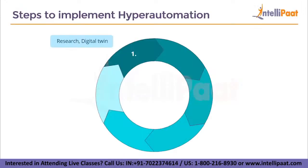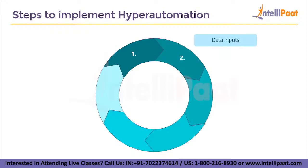The first step to implement hyperautomation is to gain knowledge of the already existing manual operations and processes within an organization. Then come up with a plan to automate all these processes, which will require a stack of applications and solutions — this is called a digital twin for that process. Test the digital twin and finally replace the manual process altogether with it.